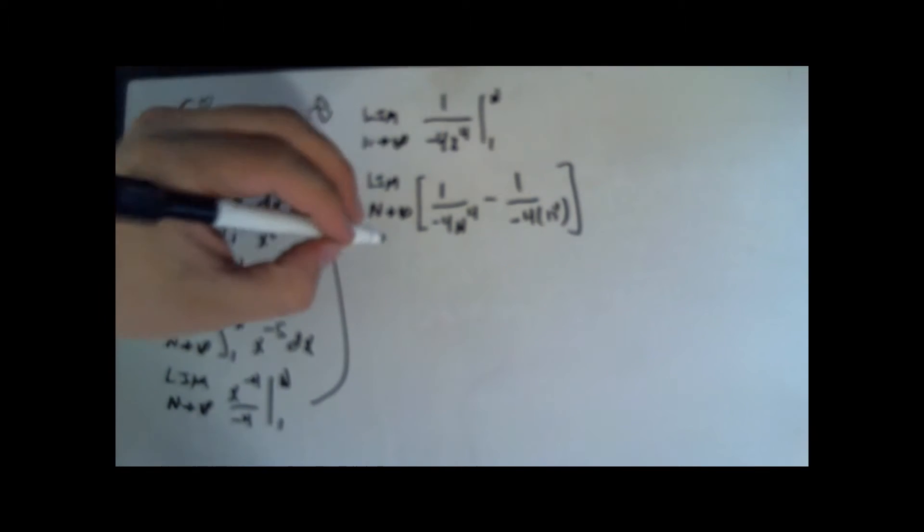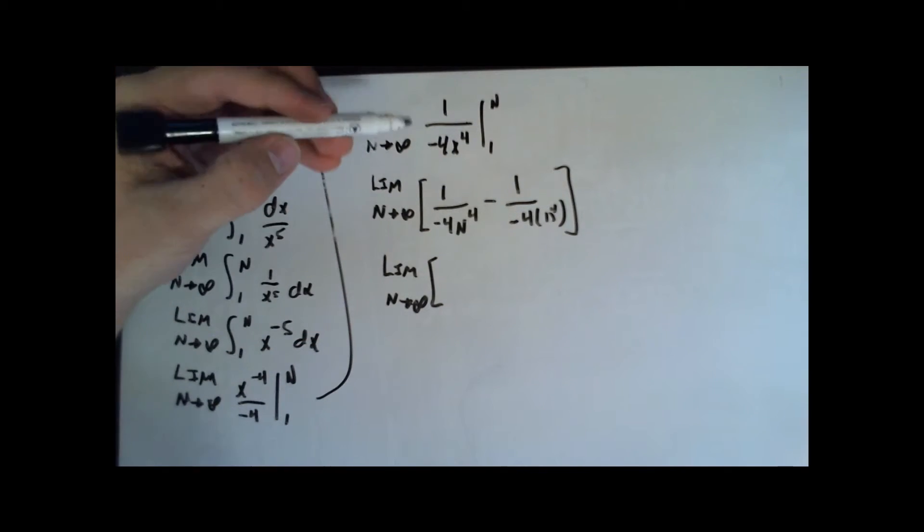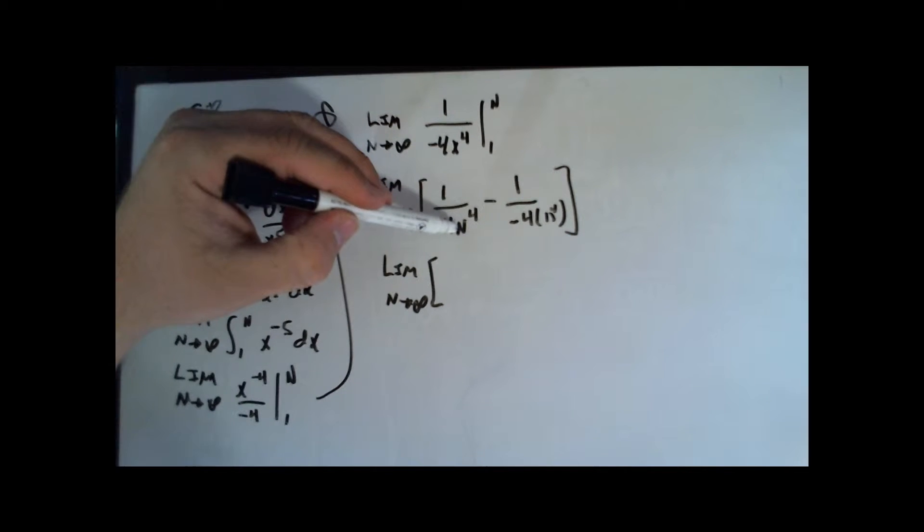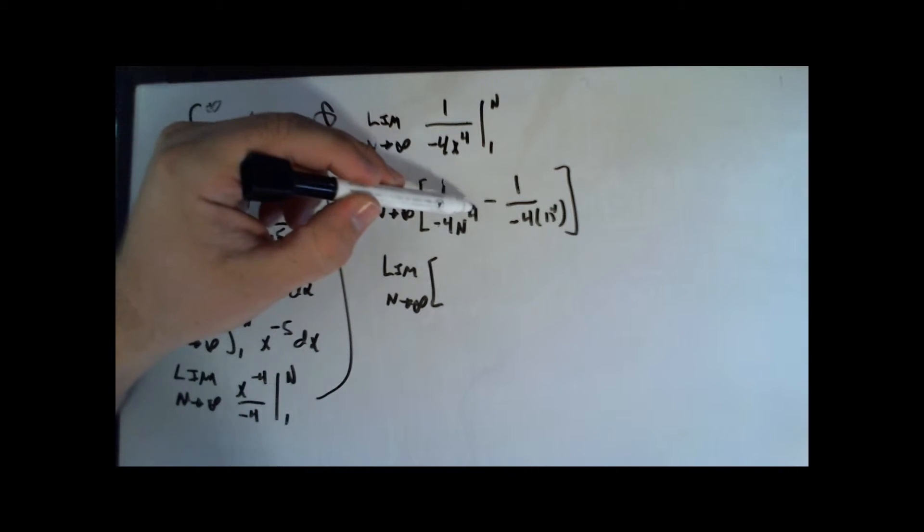We can simplify again. The limit of n approaching infinity. Let's say that n is infinity. In this case, 1 over negative 4 times infinity to the 4th power. That's just a huge negative number.